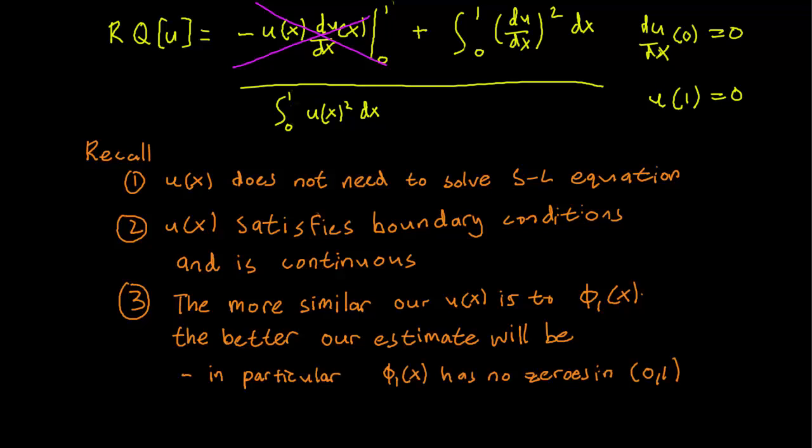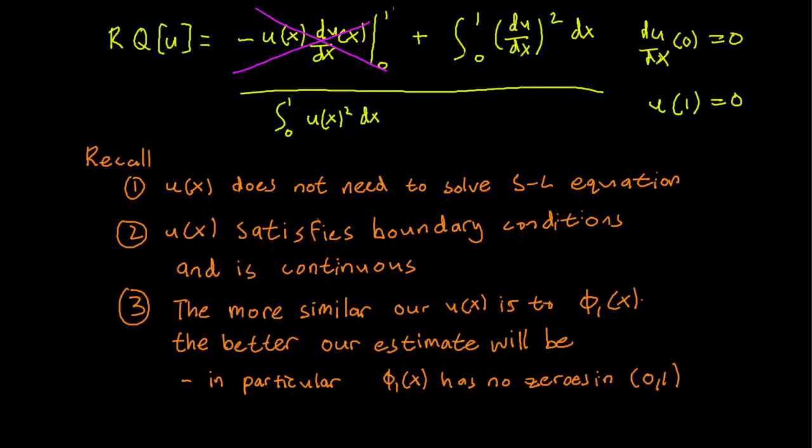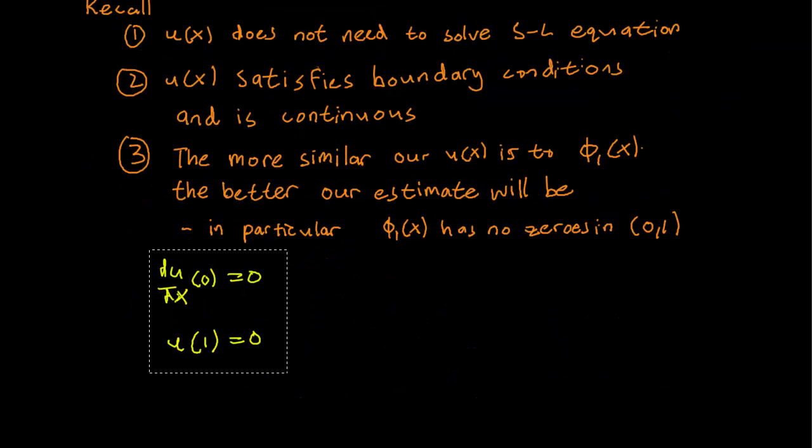The closer our u is to the actual eigenfunction of the smallest eigenvalue, the better our estimate for that eigenvalue will be. Obviously, in this situation, we don't know what the eigenfunction is, but we can make some intelligent guesses. In particular, φ₁(x), the first eigenfunction for the smallest eigenvalue, has no zeros in (0,1). We have these boundary conditions, of course, and we have to obey them.